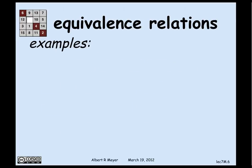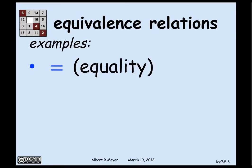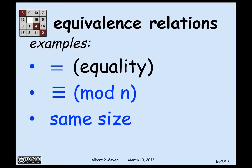Some examples of equivalence relations illustrate why they're so basic. The most fundamental one is equality — obviously equality is symmetric, reflexive, and transitive, so it's an equivalence relation. Another one is congruence mod n, which is also symmetric, transitive, and reflexive. Another relation would be that two sets are the same size, for finite sets. And another example would be a bunch of objects having the same color — two objects having the same color is symmetric, transitive, and reflexive, so it's an equivalence relation.